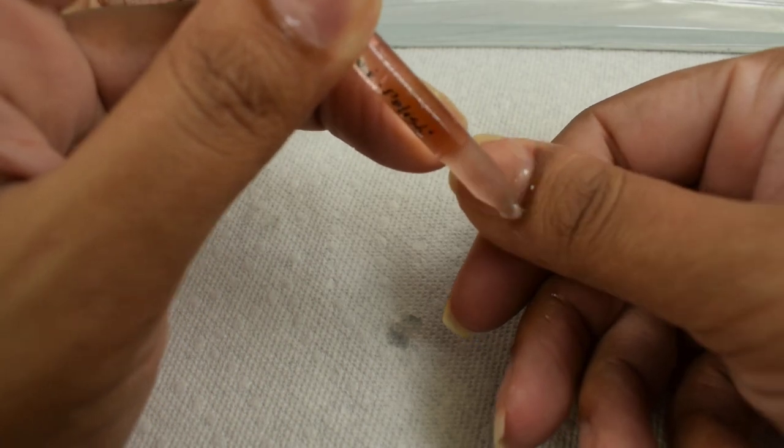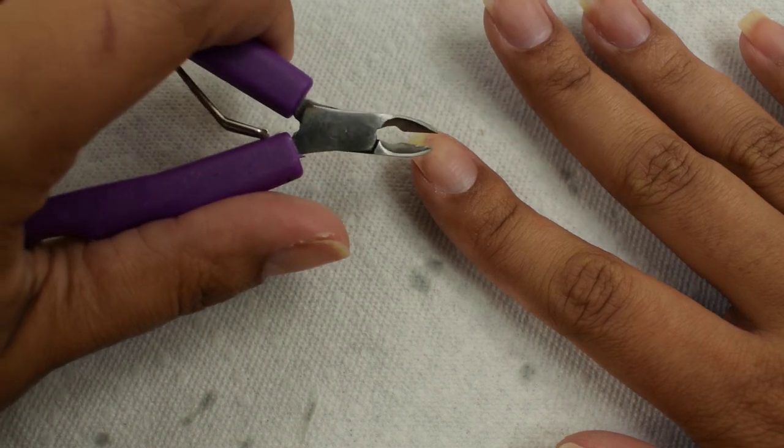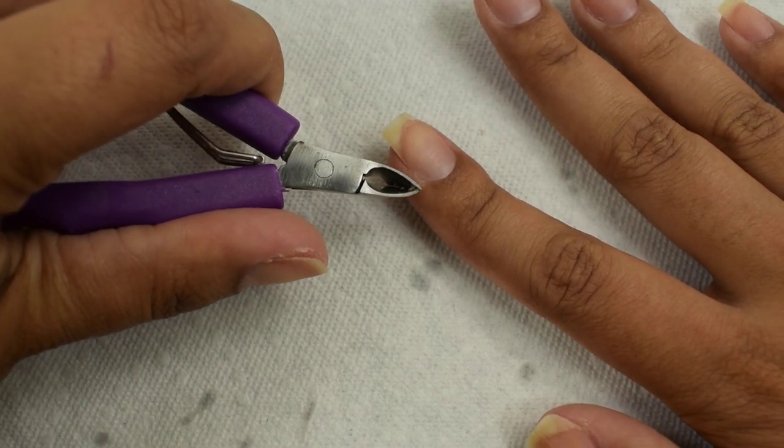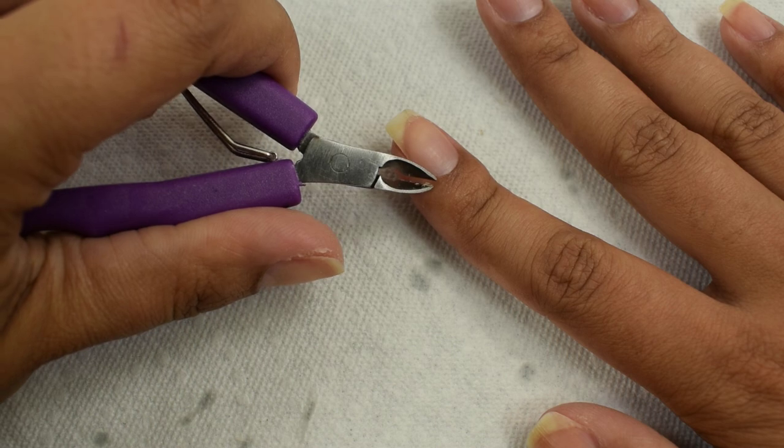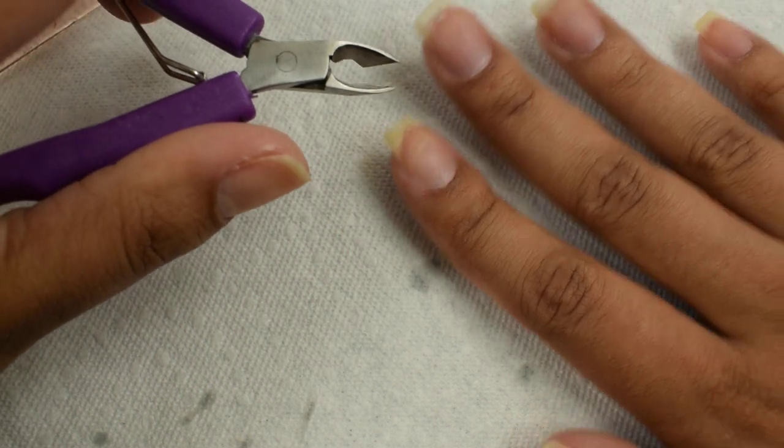Now, once I have pushed back my cuticles again, I go in and I wash with water. You don't want any of that excess sitting on your skin at all. Make sure you use soap. I like to use warm water. And then I have this cuticle nipper here.